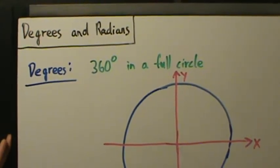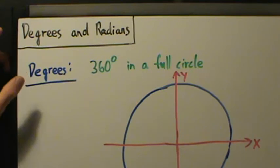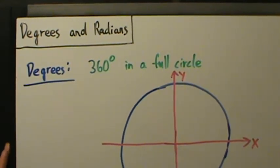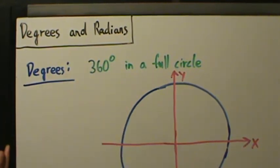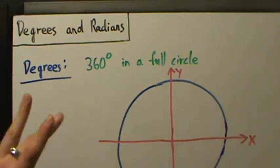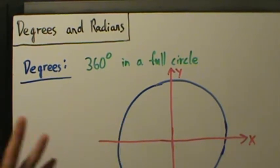In this video we're going to define degrees and radians, and then in the next video we'll talk about how to convert between them. It's kind of hard to define what a degree really is, but it's easier to talk about in terms of circles. We don't have to have circles in the picture to deal with degrees, but it's easier to define them that way.